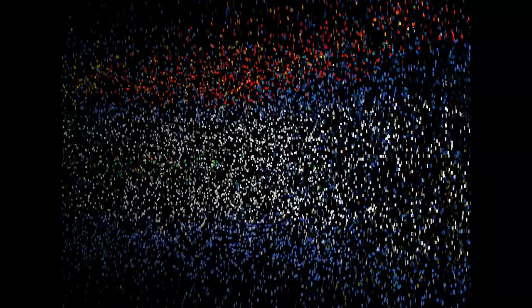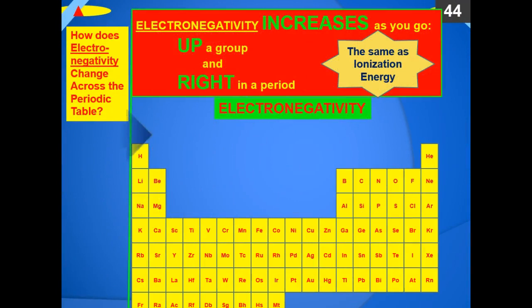Electronegativity, just like ionization energy, increases as you go up and to the right. Cesium, calcium, potassium, and barium have very low electronegativities — very little strength to pull electrons in from outside of themselves — whereas fluorine, oxygen, sulfur, and chlorine have high electronegativities. A major difference between electronegativity and ionization energy is in the noble gases. The noble gases do not want to take electrons away from other atoms, because they already have full octets. We'll talk more about that when we discuss the octet rule.